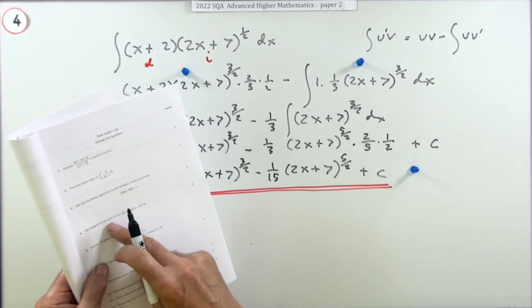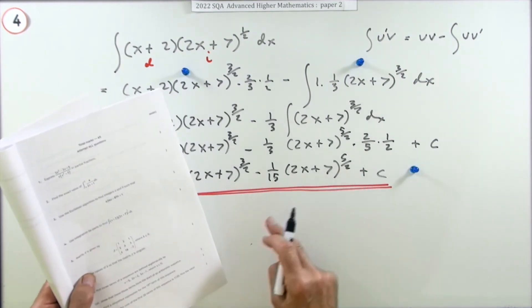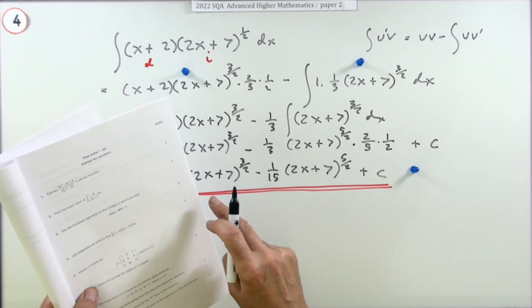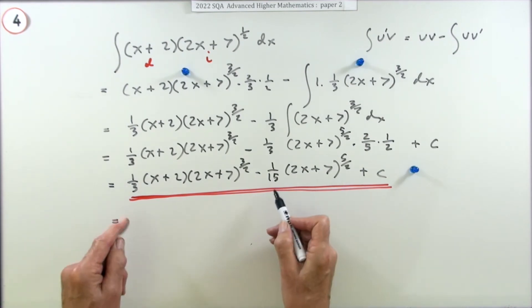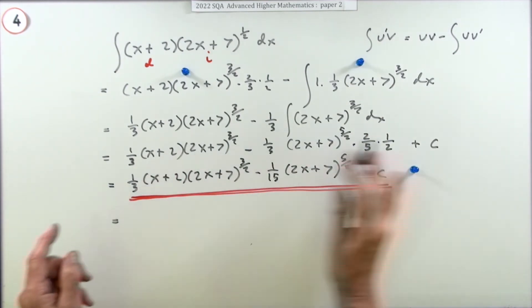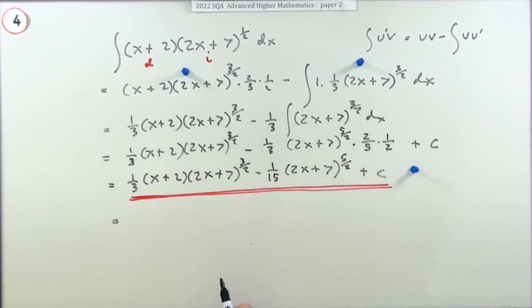Again, it just said use integration by parts to find this. It didn't say 'and simplify the result,' because that result can be simplified. You can tidy that up. You don't need to do this, of course - you wouldn't do this if I didn't actually say. But you can take out any common factors and also the worst of the fractions to leave the remaining parts just as integers. So you could take out 15ths. So I could take out 15th. That 2x plus 7 is a common factor.